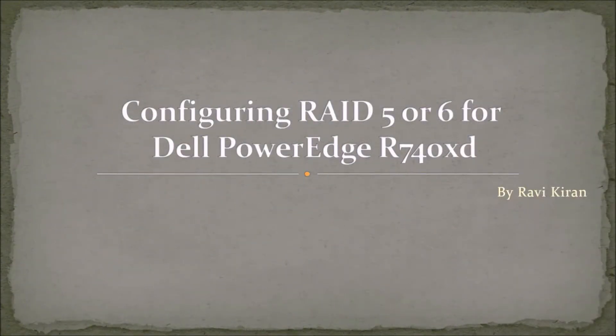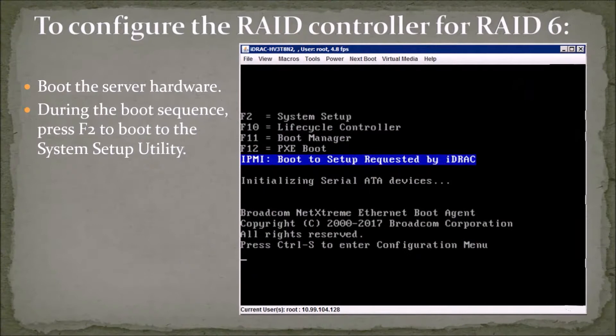Today we discuss configuring RAID 5 and 6 for Dell PowerEdge R740 XT. To configure the RAID controller for RAID 6, boot the server hardware. During the boot sequence, press F2 to boot to the system setup utility.